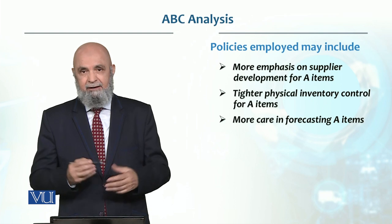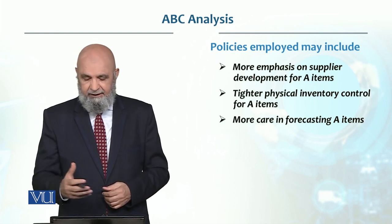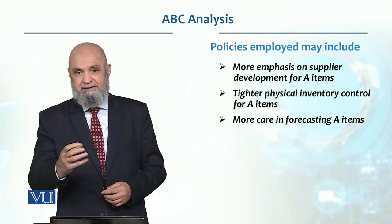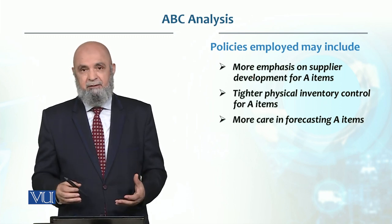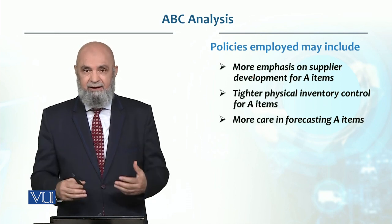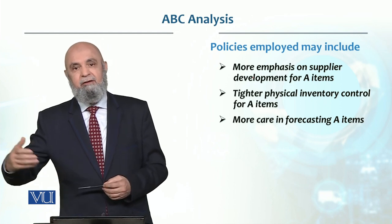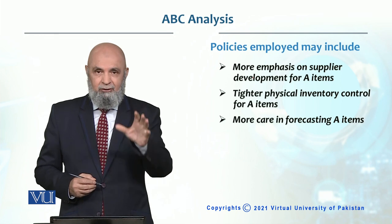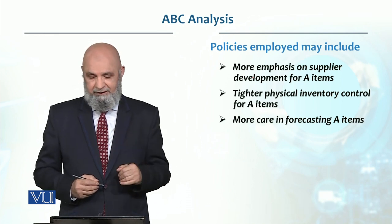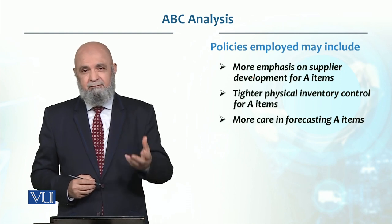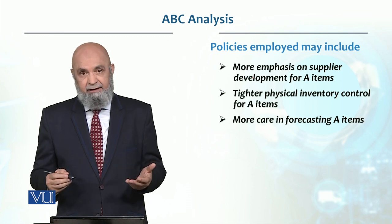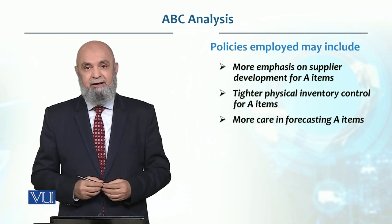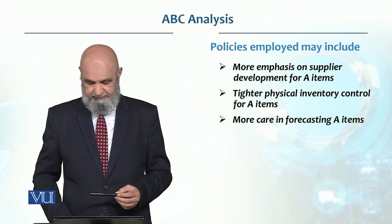Policies differ for each class. For A items, more emphasis is placed on supply development, physical inventory control, and continuous review systems — every time material is withdrawn, we check remaining stock and when to place the next order. B items usually go under periodic review. Forecasting for A items must be done very carefully, as they are considered high-value products.